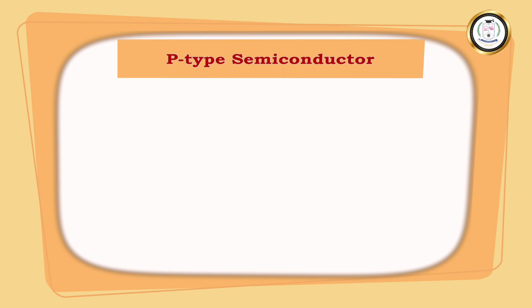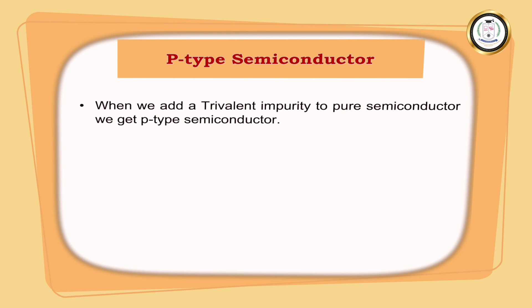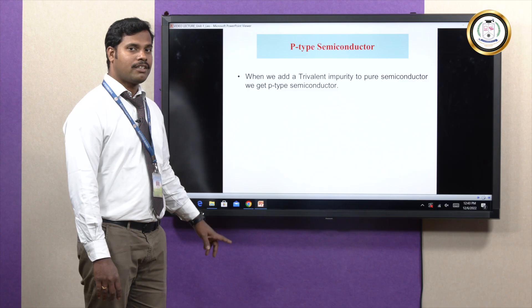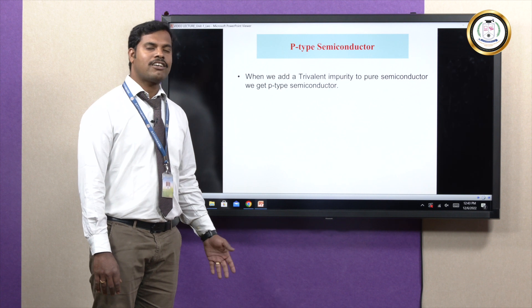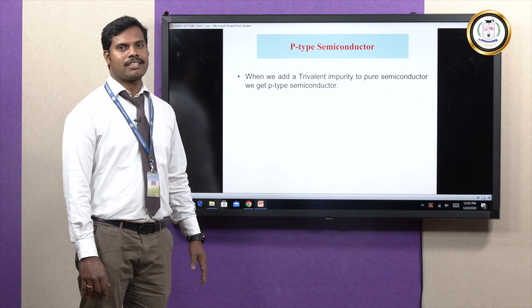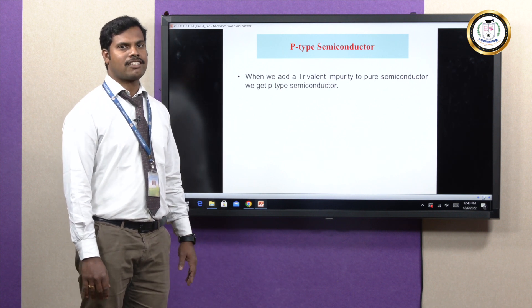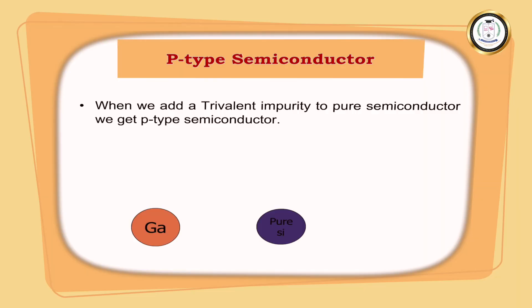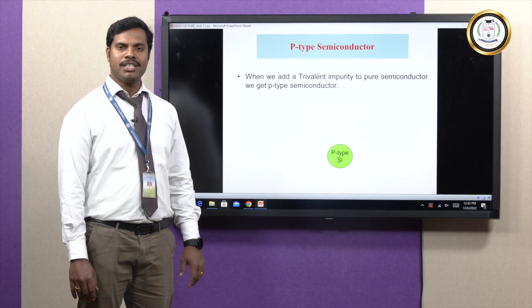The next type is P-type semiconductor. In P-type semiconductor, a trivalent impurity is added. Trivalent impurities have only three valence electrons in the outer band, whereas silicon or germanium — the pure semiconductor — has four valence electrons. One example of a trivalent impurity is gallium; adding gallium to pure silicon produces P-type material.